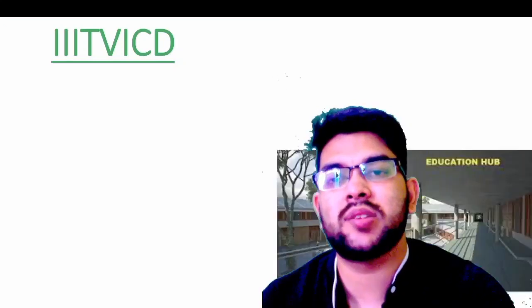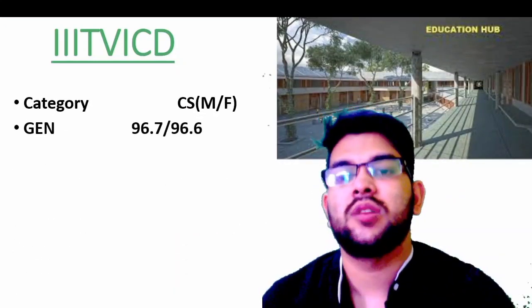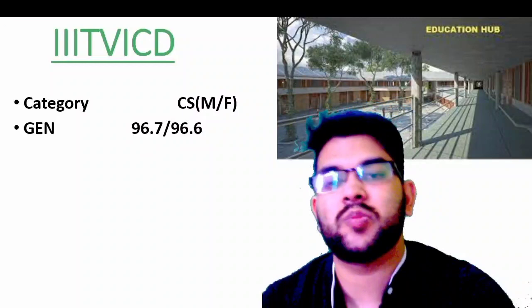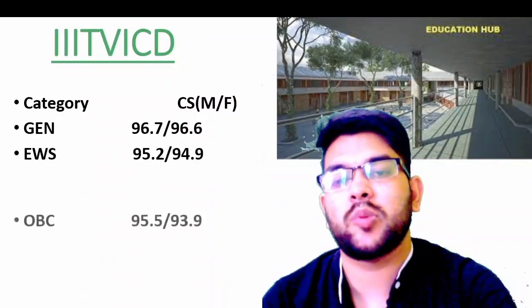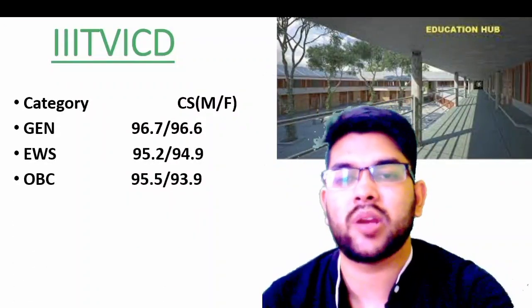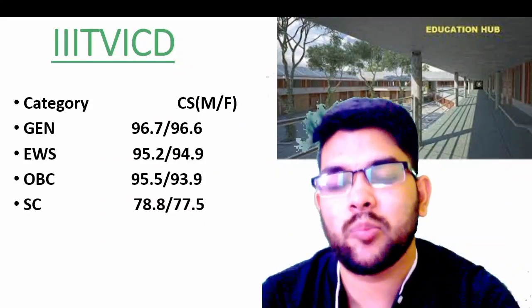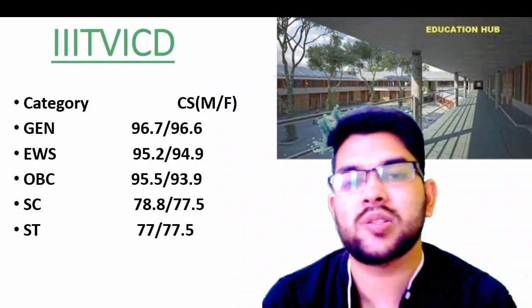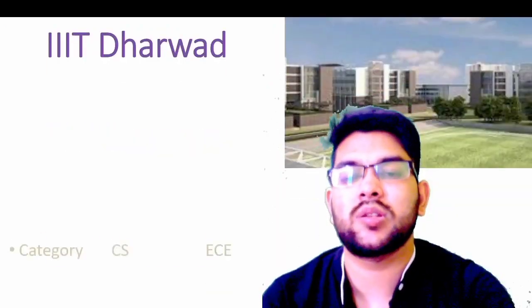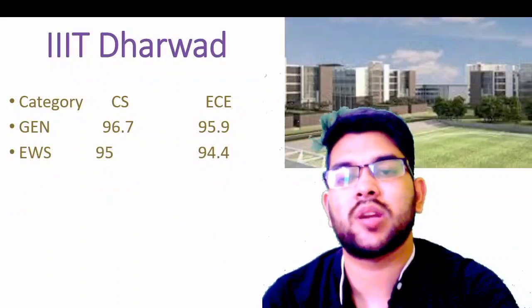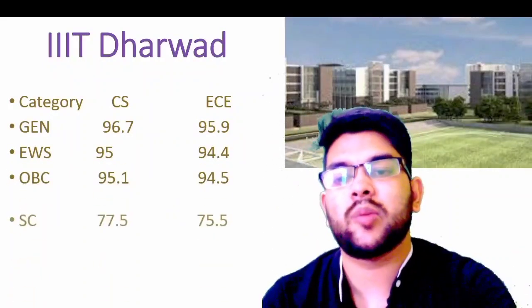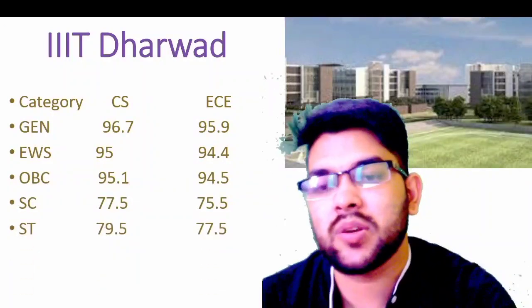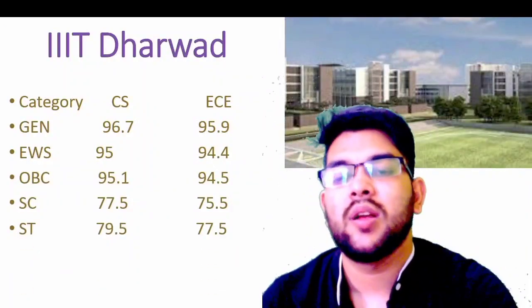For another IIIT with only one CS branch: General — 95.6. EWS — 93.9. OBC — 94.4. SC — 75.8. ST — 76.5 percentile. For IIIT BCED: General — CS male 96.7, female 96.6. EWS — male 95.2, female 94.9. OBC — male 95.5, female 93.9. SC — male 78.8, female 77.7 and 77.5. For IIIT Dharwad: General — CS 96.7; EC check sidewise. EWS — 95. OBC — 95.1. SC — 77.5. ST — 79.5 percentile.